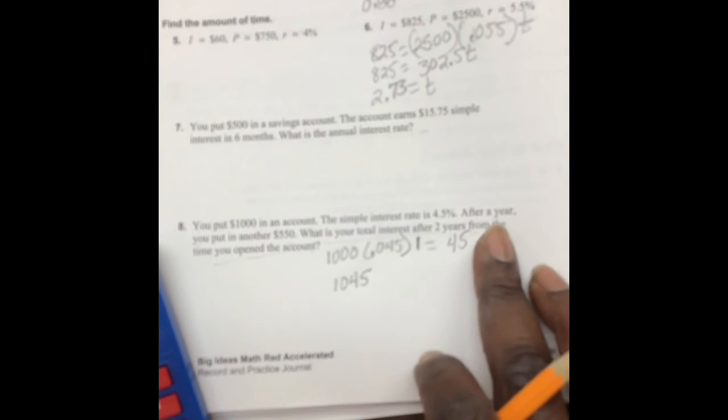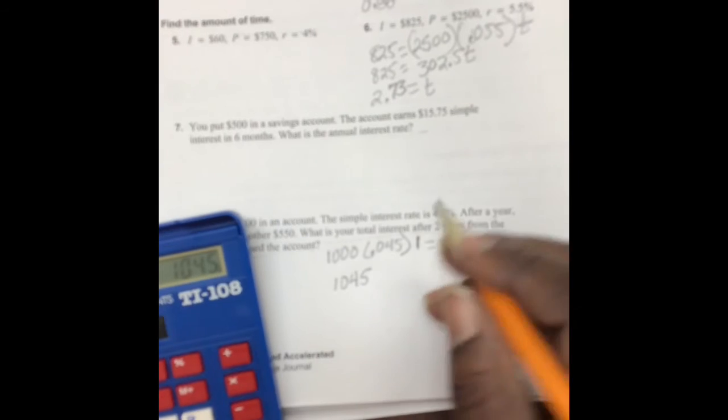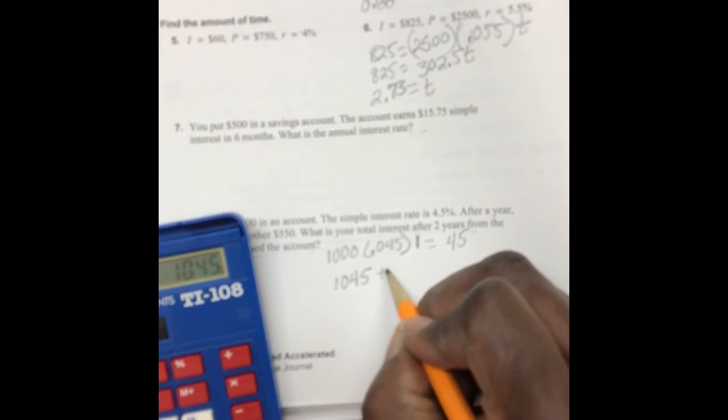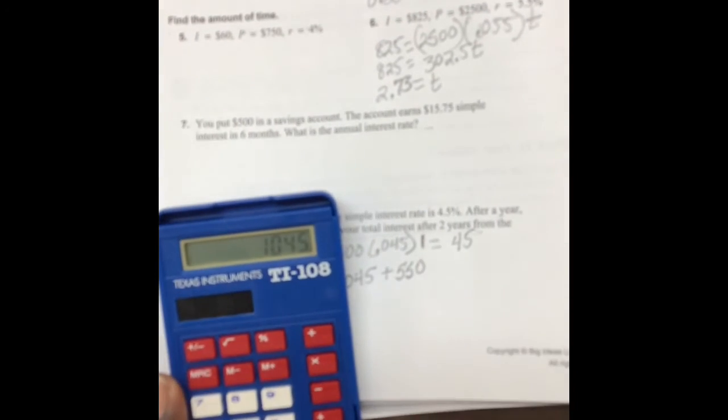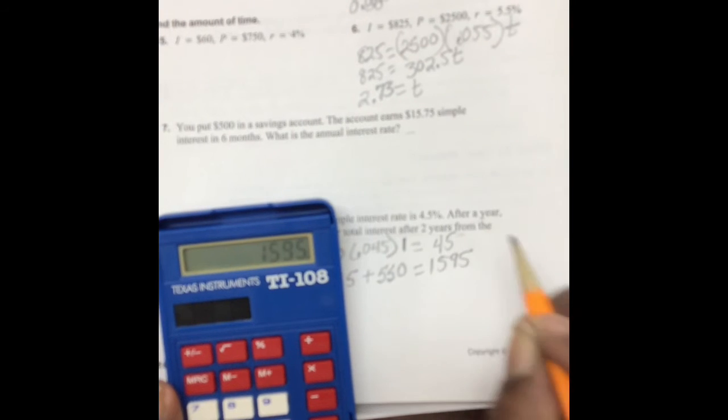Then it says after one year, you put in another $550. So we're going to add $550 to this balance plus 550, and so now your new balance is $1,595.